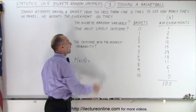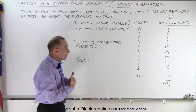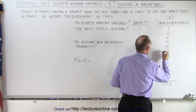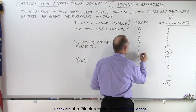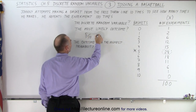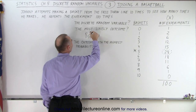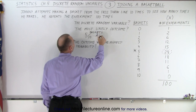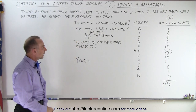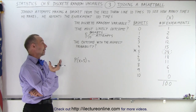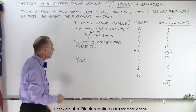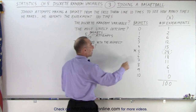What is the most likely outcome? When the discrete random variable is the largest, that's the most likely outcome. You can see there are 28 of them, so the most likely outcome is that he shoots five out of 10 baskets. Notice this is two different ways of asking for the same thing — the outcome with the highest probability is also that he makes five out of 10 baskets.